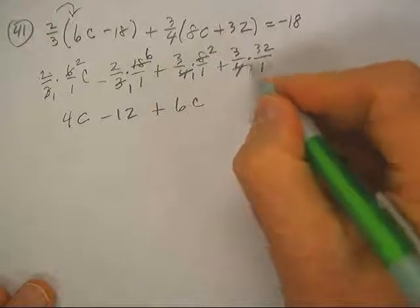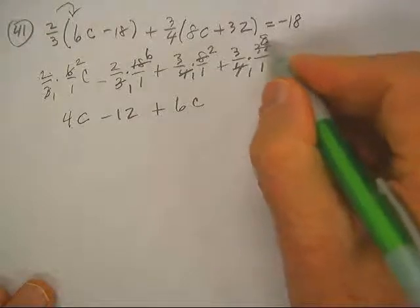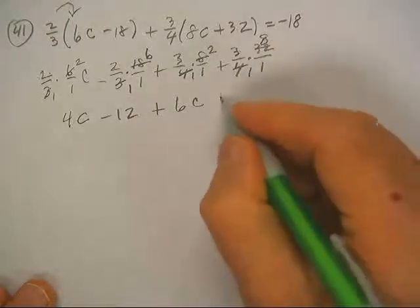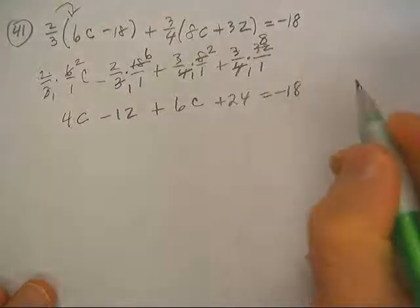Get in the habit of dividing first because watch what happens. It makes the number smaller. 8 times 3 is 24, equals negative 18.